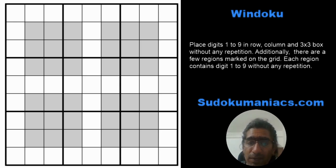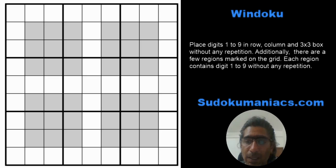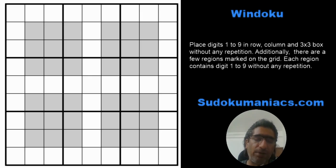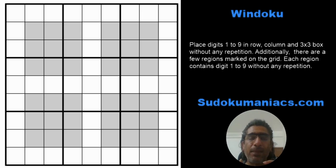I'm going to focus on quite a few tips and techniques utilized while solving a Windoku, whether it be an easy one or a hard one. The rules are that classic Sudoku rules apply - no row, column, or three-by-three box can have any digit repeated; all digits one to nine must appear. And in Windoku, we have these four gray boxes marked as extra regions.